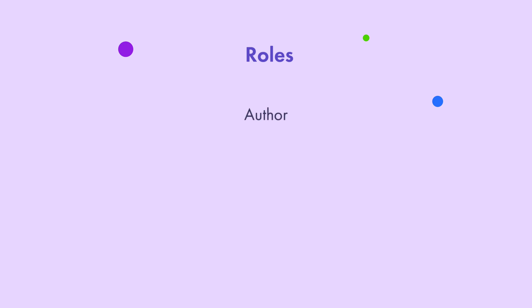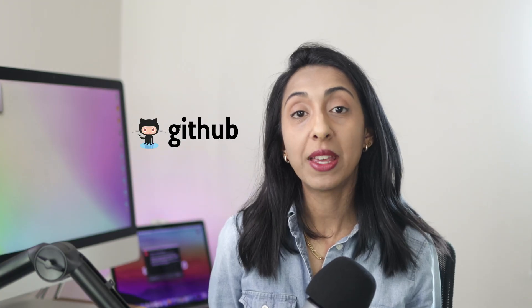There are also a few open source roles. First we have the author - the person or organization that created the project. Next we have the owner - the person with administrative control over the project's repository, which may or may not be the author. Then we have the maintainers - contributors who manage and drive the overall project vision and keep things moving. Then there is the contributor - that's everyone like you and me helping out with the project. And finally there are community members - anyone that's using the project.